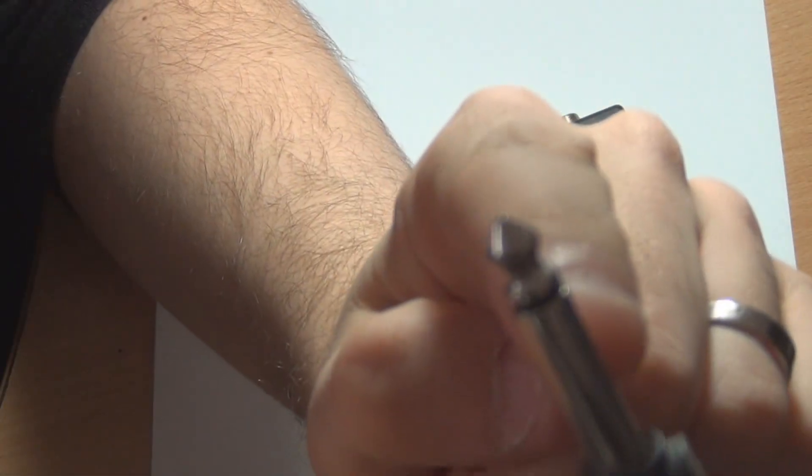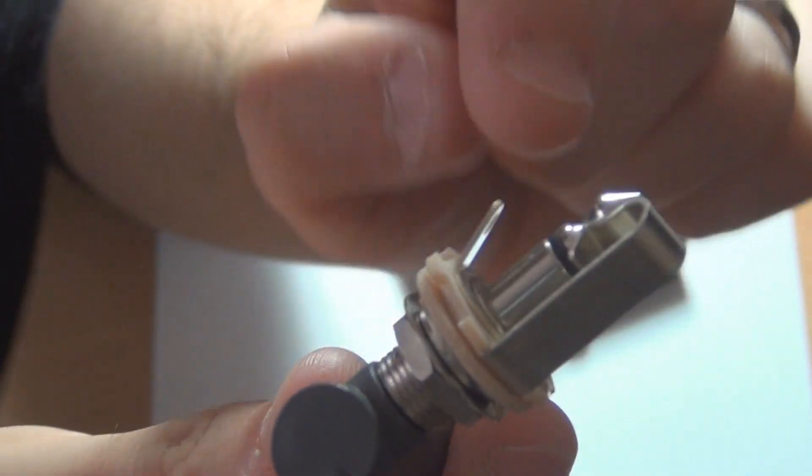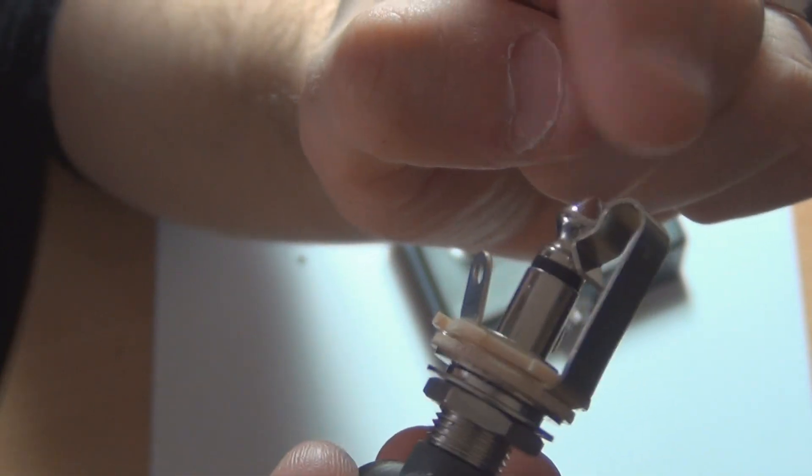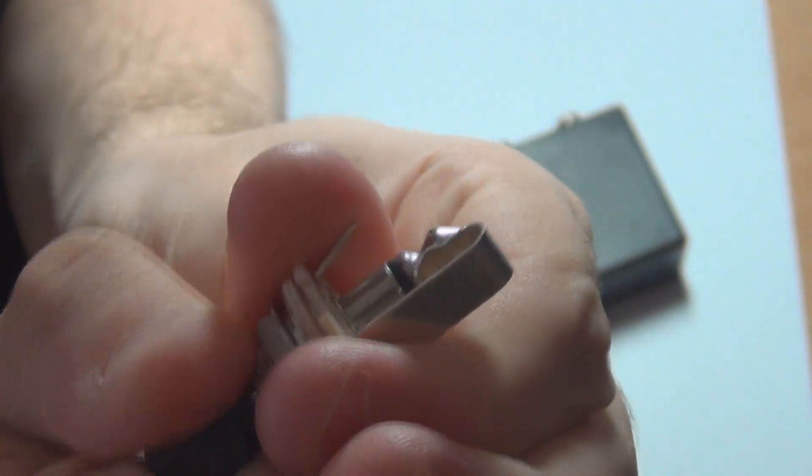So on the guitar cable this part here is the shield and this part is the tip obviously. So when you plug that in you'll see that the inside of the jack is actually now connected to the shield bit that I just showed you and the tip is connected to the tip. So that's basically how the jack works in that respect.